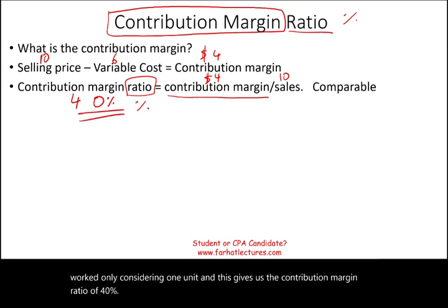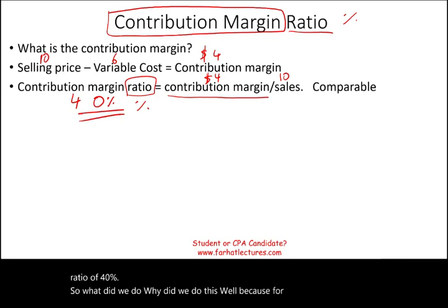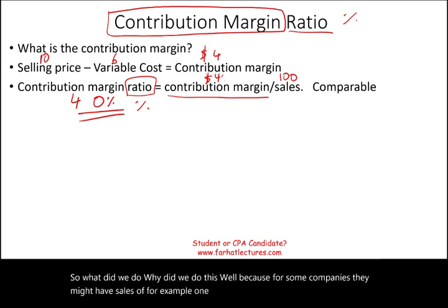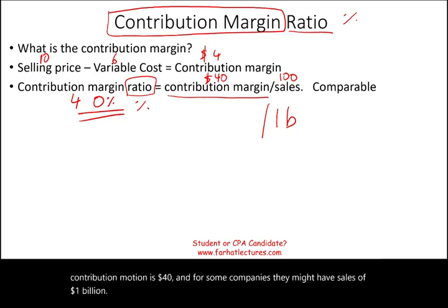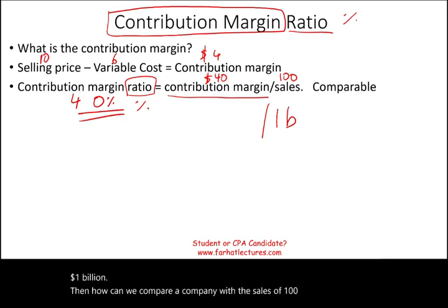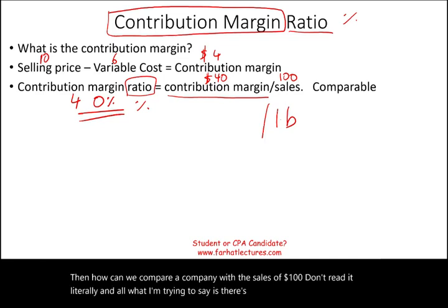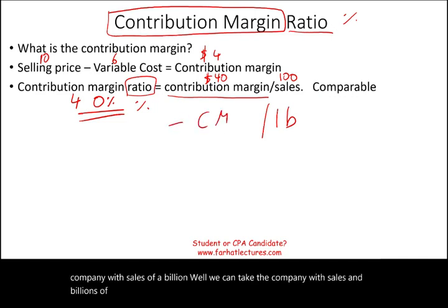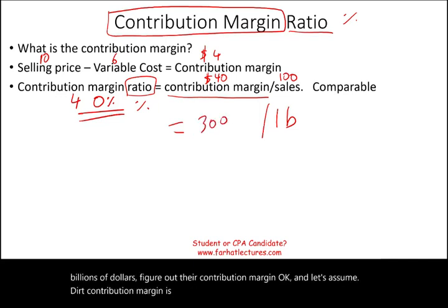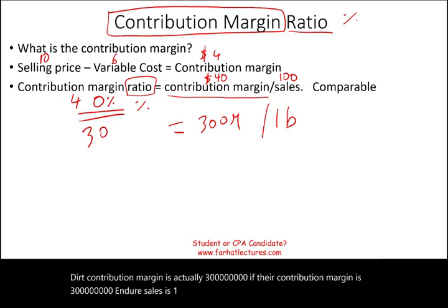So why did we do this? Because for some companies, they might have sales of $100 and a contribution margin of $40. And for some companies, they might have sales of $1 billion. So how can we compare a company with sales of $100 to one with sales of a billion? We can find the contribution margin for each. If a company's contribution margin is $300 million and their sales is $1 billion, we would say that company has a contribution margin ratio of 30%.